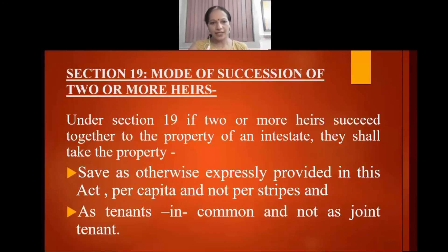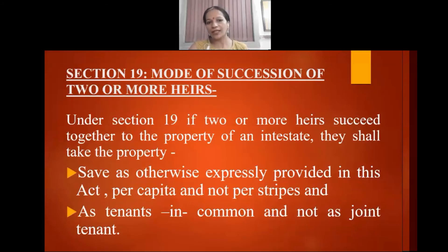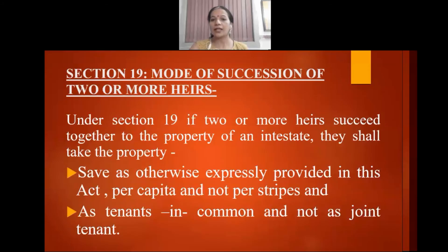Under Section 19, if two or more heirs succeed together to the property of an intestate, they shall take the property — save as otherwise explicitly provided in this act — per capita and not per stripe, and as a tenant in common and not as a joint tenant.